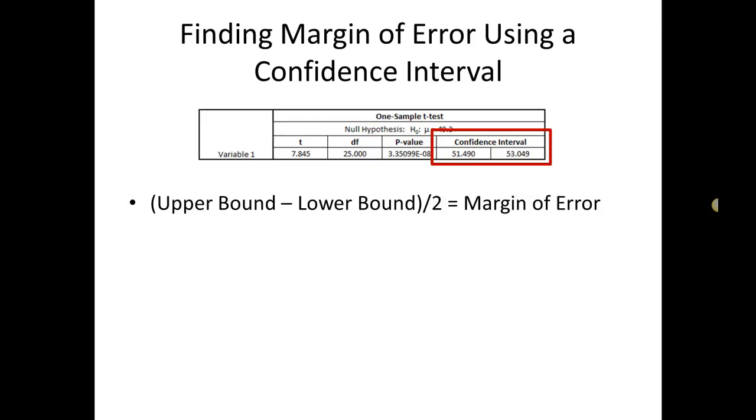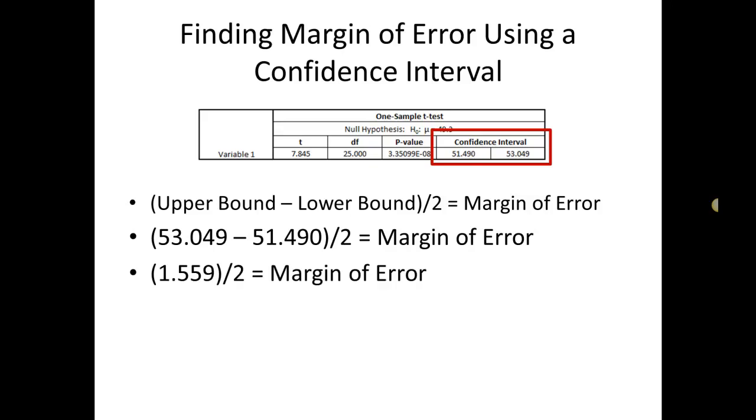So with the data that we were just looking at, my upper bound was 53.049, lower bound 51.49. So I subtract those, divide by two, and I end up with a margin of error of .7795.